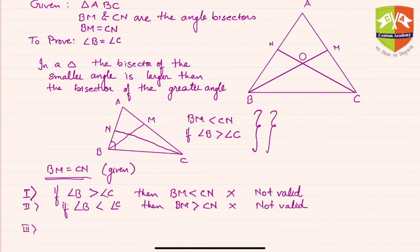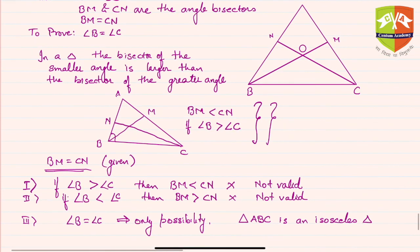Hence the only possibility is case three: that is, angle B must be equal to angle C. So this is the only possibility, either way. Hence we conclude that triangle ABC is an isosceles triangle. Hence proved.